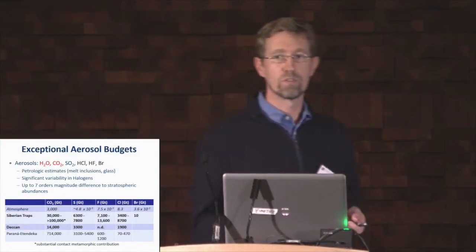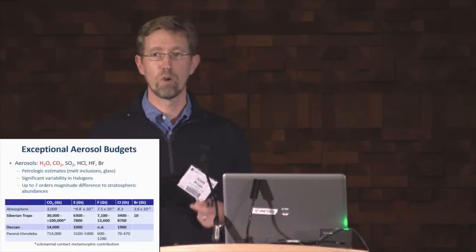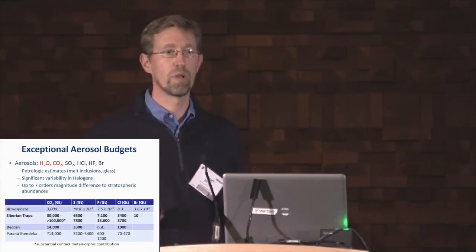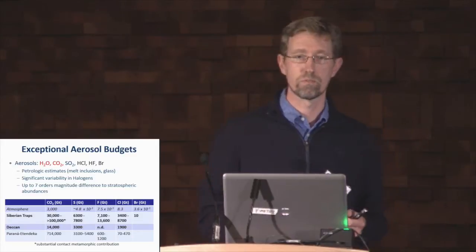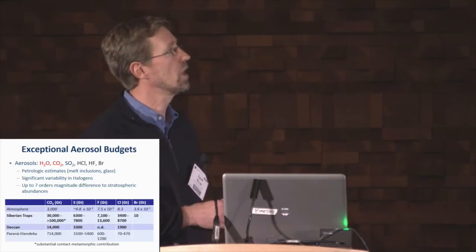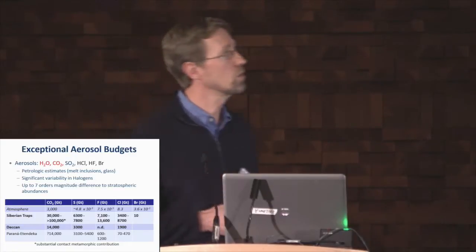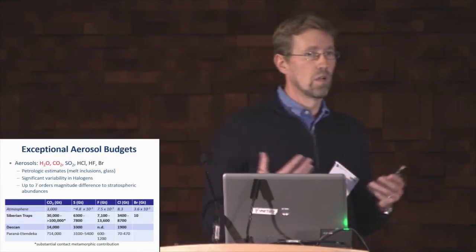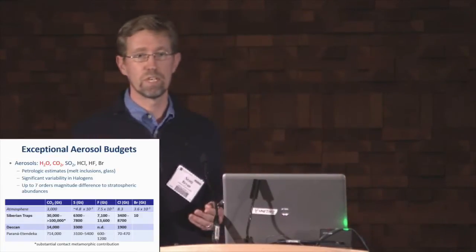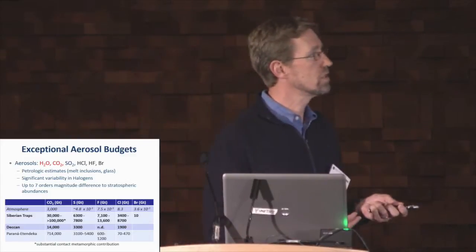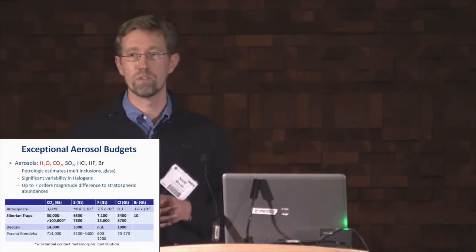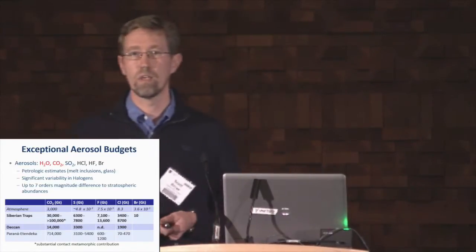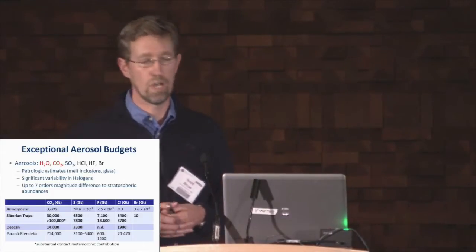It's not the magma volume that's important, but the volatiles that can be dissolved in that magma volume, exsolved and emitted during eruptions or degassed from shallow intrusions, that's really critical to the debate about how LIPs might trigger mass extinctions. The key volatiles are carbon dioxide, sulphur, and a number of halogen species. While the data are still in their infancy, they are starting to indicate the tremendous tonnages of aerosols being emitted during LIP events — budgets that really dwarf our current budget for these volatiles in the present-day atmosphere.